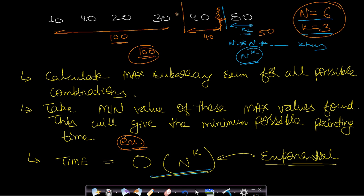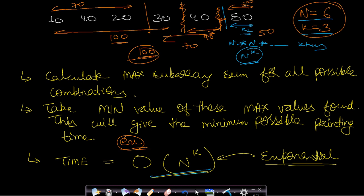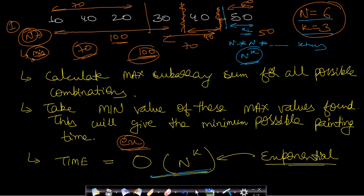If we shift the partition point, the values become 70, 70, and 50, giving a time of 70 — better than 100. We try all possible configurations, compute the maximum for each, and track the minimum of those maxima. This gives the optimal configuration.